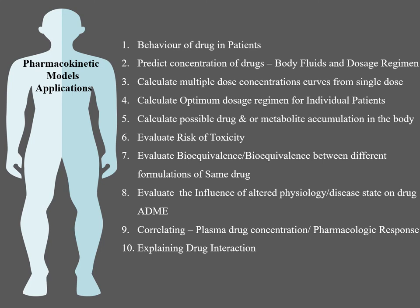It also helps to calculate the optimum dosage regimen for an individual patient, and to calculate possible drug or metabolite accumulation in the body. What possible drugs or metabolites have been accumulated in each part of the body can be assessed with pharmacokinetic models. It also helps to evaluate the risk of toxicity — the maximum concentration of drug that leads to toxicity can be assessed. And it helps to evaluate bioequivalence and bioinequivalence between different formulations of the same drug.